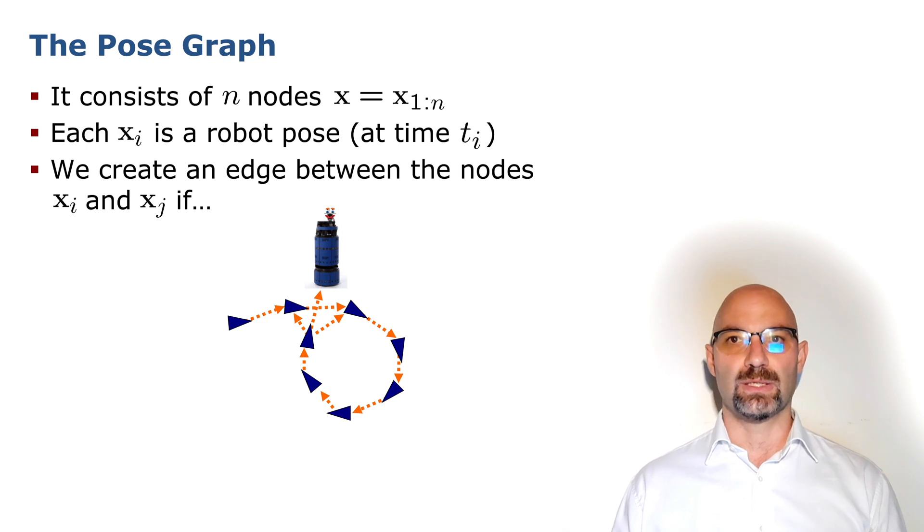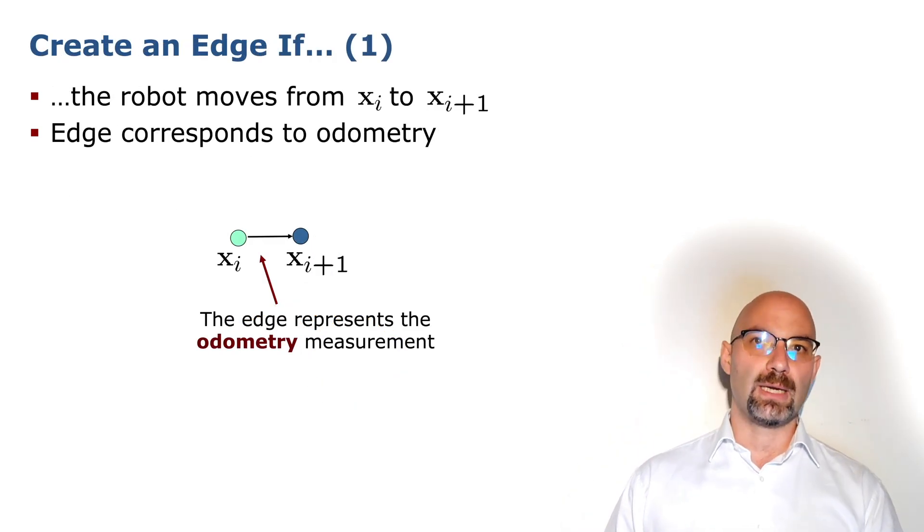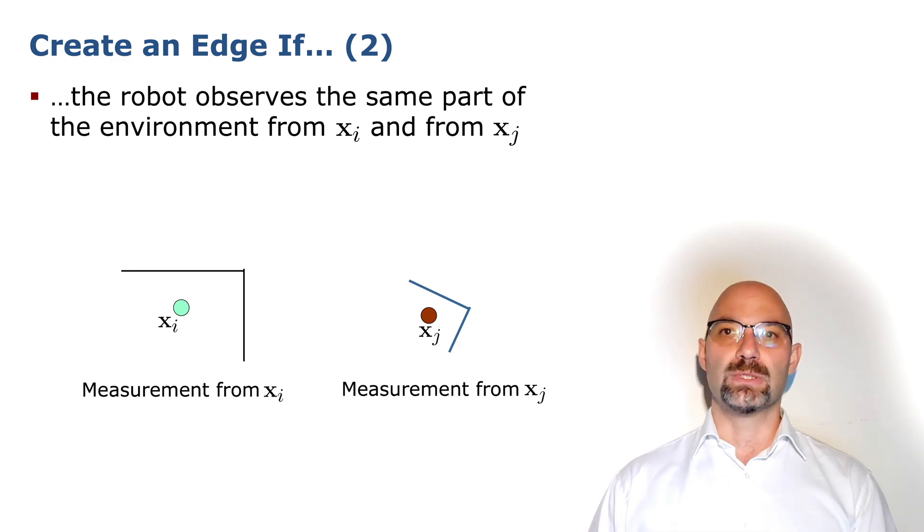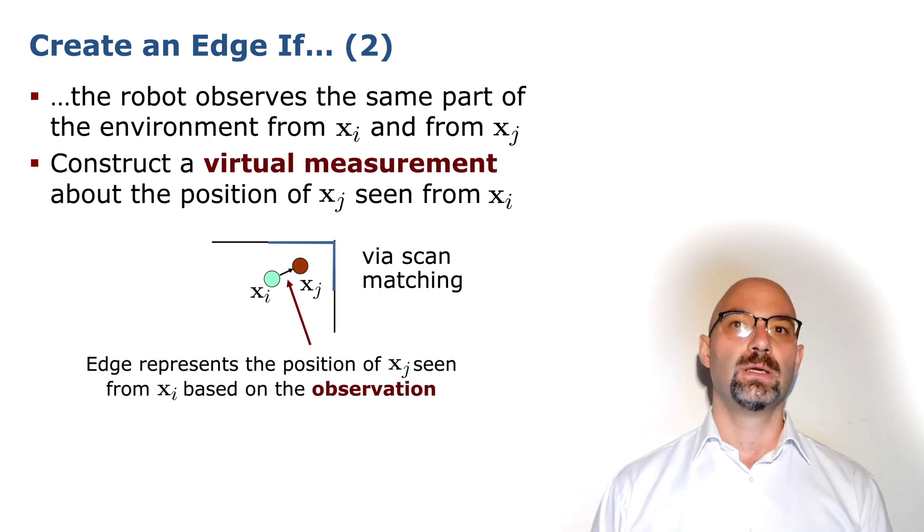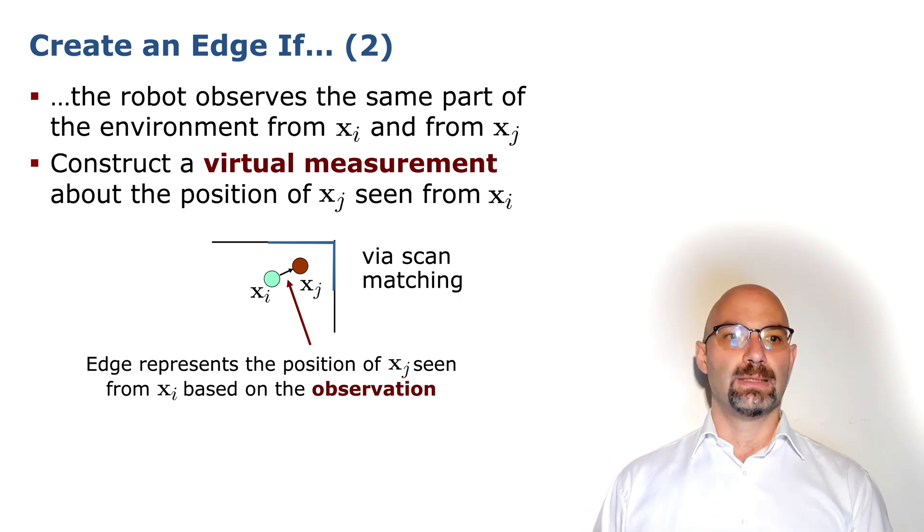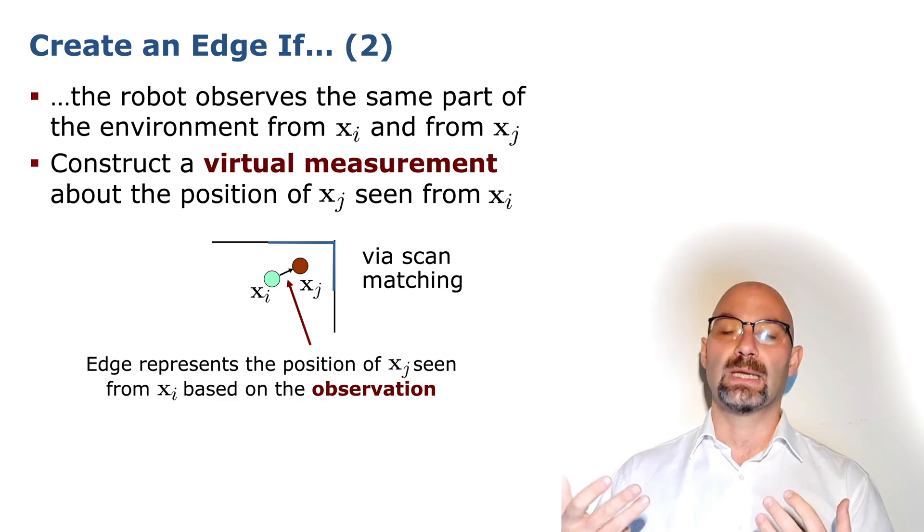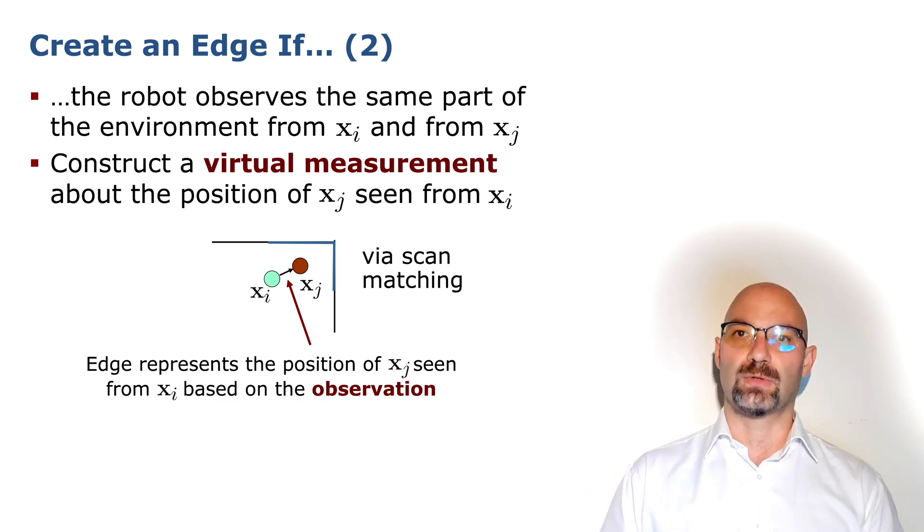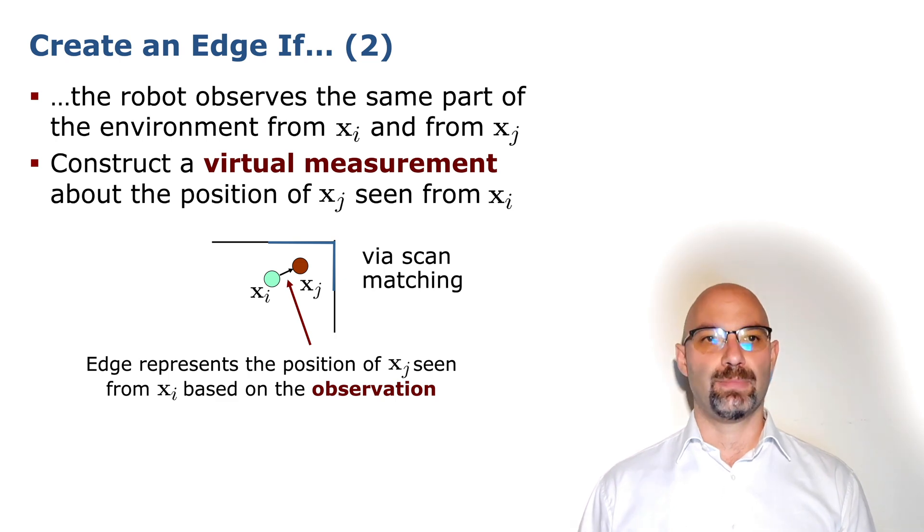The entire minimization problem could be boiled down into a graph. The nodes of this graph represent the robot positions along the trajectory. In contrast, edges represent virtual measurements. Such virtual measurements between pairwise nodes might arise either from odometry measurements that directly estimate the relative position between two temporally consequent robot positions or they can be estimated by registering pairwise environmental measurements in order to find their maximum overlap.